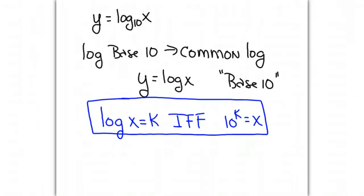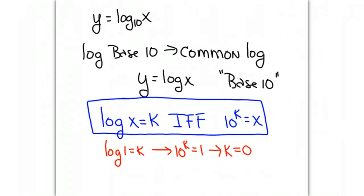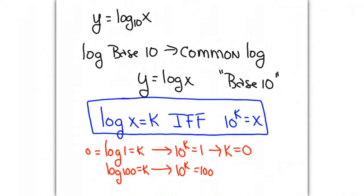Let's do a couple of examples. If we have log base 10 of 1 equals k, we rewrite it as 10 to the k equals 1, so k equals 0. The log base 10 of 1 is equal to 0. If we have log base 10 of 100, rewriting it as an exponential expression gives 10 to the k equals 100, so k equals 2. The log base 10 of 100 is equal to 2.